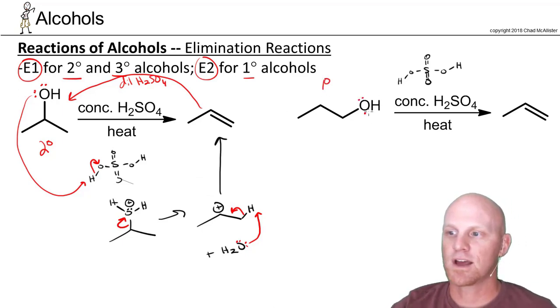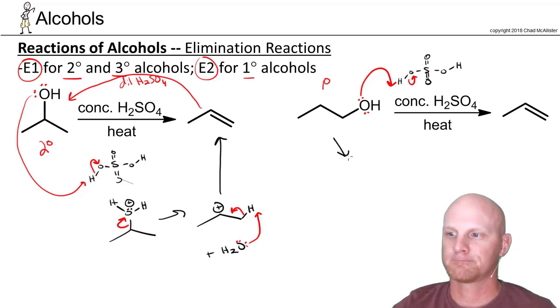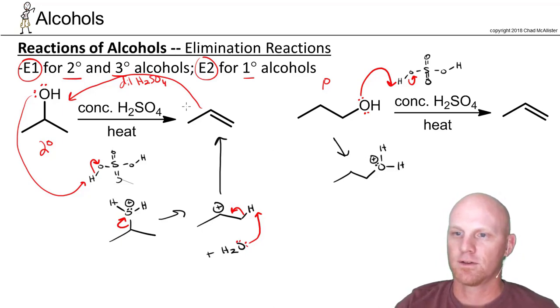The first step's the same. We've got to turn our OH, which is a bad leaving group, into a good one, and so we'll get protonated by sulfuric acid. And now our bad leaving group is good, being a water molecule.